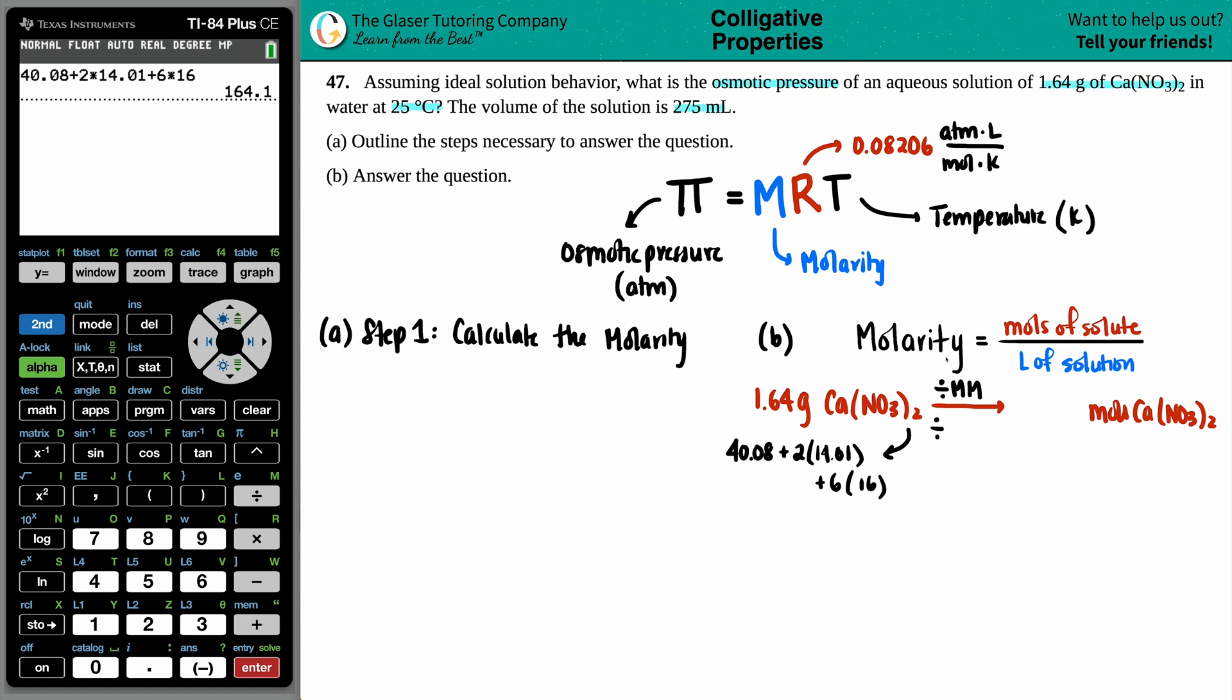So I'm going to take my 1.64 and divide it by 164.1. Divide it by that number, and we get very, very close to 0.001. But maybe I'll just extend it a little bit. 0.00999, so 0.00999 moles.